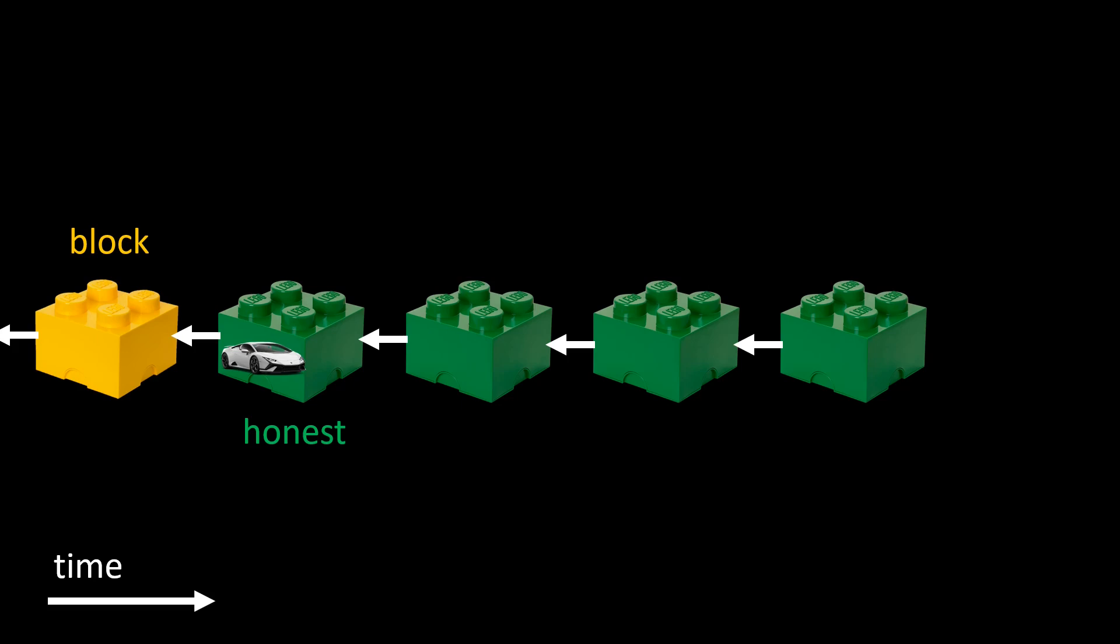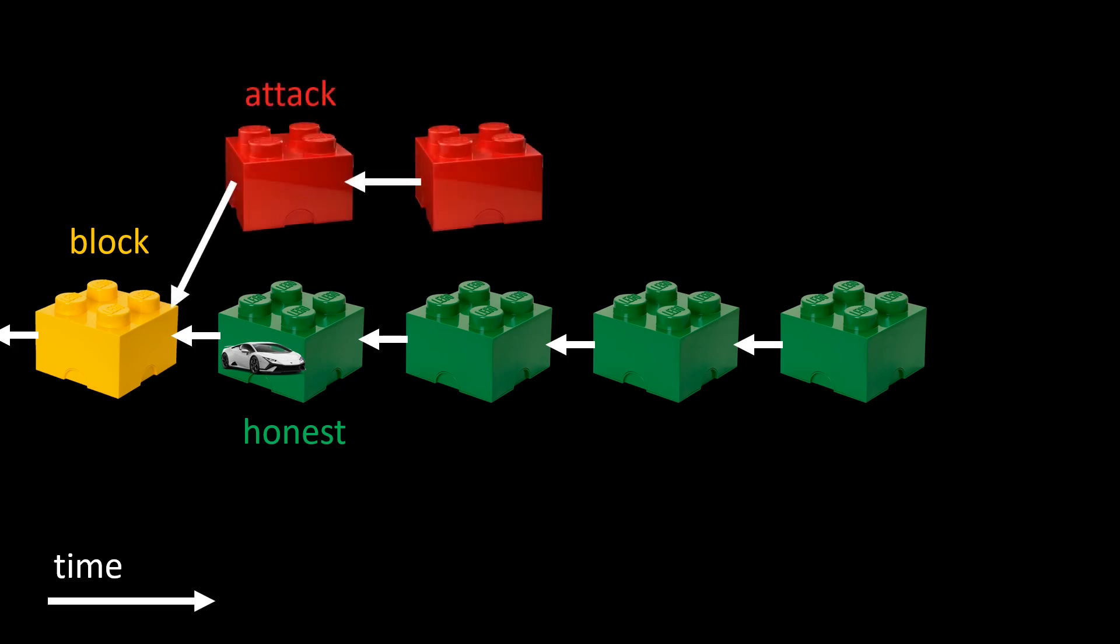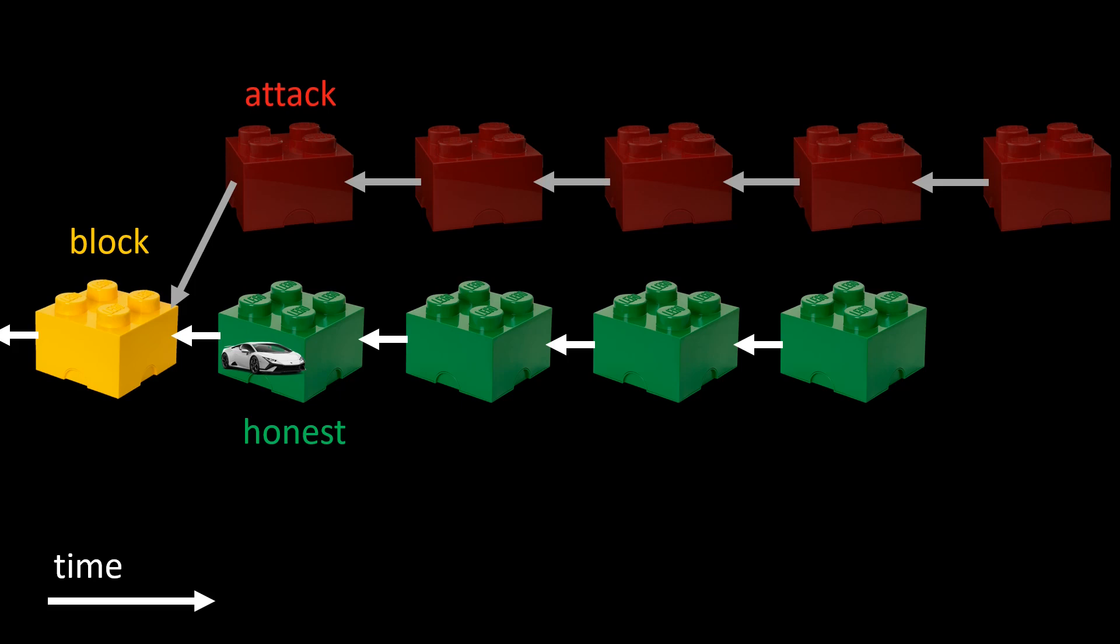However, what if the car buyer is an evil attacker with a lot of mining power? Let's assume the attacker produces these red blocks on the side. The attacker produces these blocks in secrecy and does not tell anybody about these red attack blocks. If the red attacker has more mining power than all the green honest miners together, even just 51% of the total mining power, then it is very likely that eventually the chain of the red attacker is longer than the green chain.